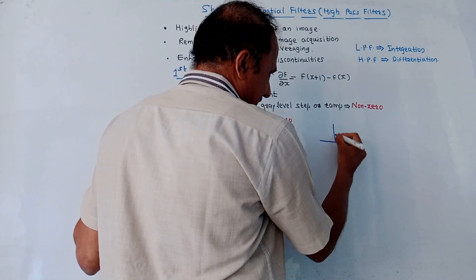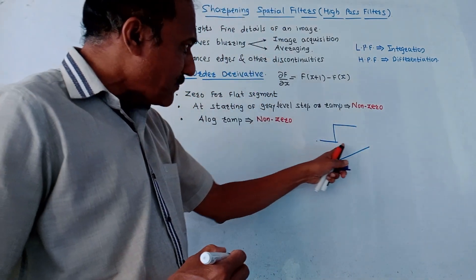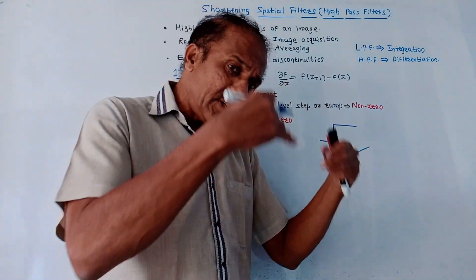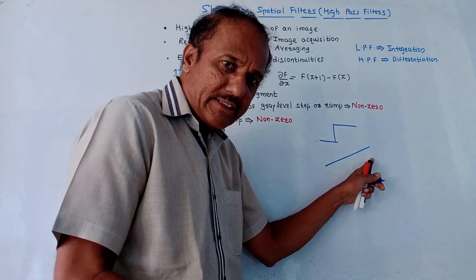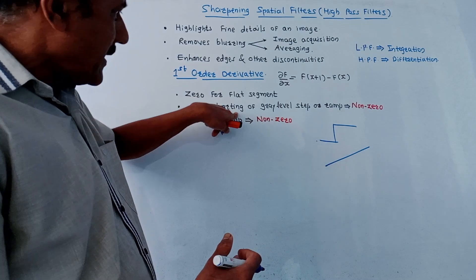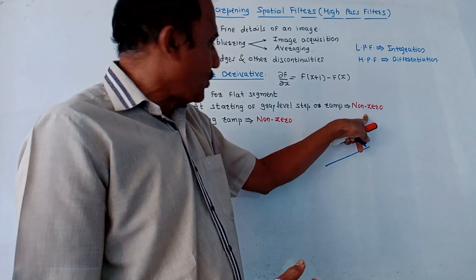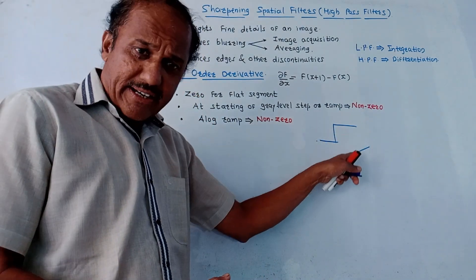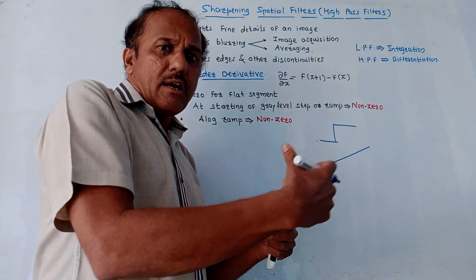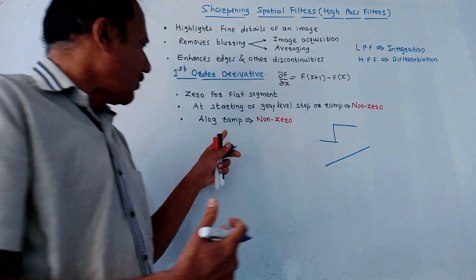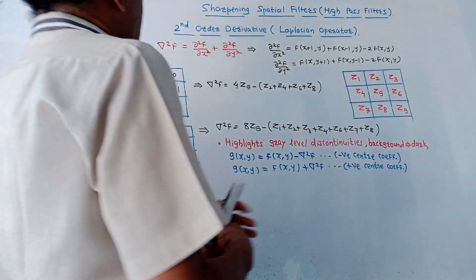In other subjects, a step signal has a sudden change and a ramp is a gradual continuous increase. At the start of a step or ramp, the first order derivative is not zero. Along the entire ramp, where gray levels are continuously increasing with constant slope, the first order derivative is non-zero.